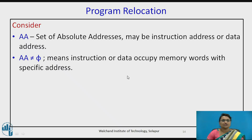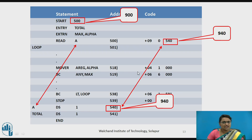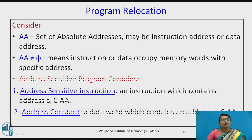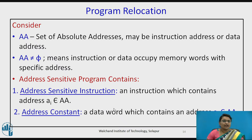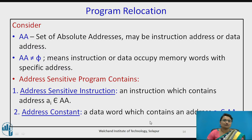Now, program relocation. Consider that AA is a set of absolute addresses — these may be instruction addresses or data addresses, and they should not be null, meaning instruction or data occupy memory words with specific addresses. An address-sensitive program contains address-sensitive instructions — instructions which contain addresses that are part of these absolute addresses, either instruction addresses or data addresses. An address constant is a data word which contains an address.